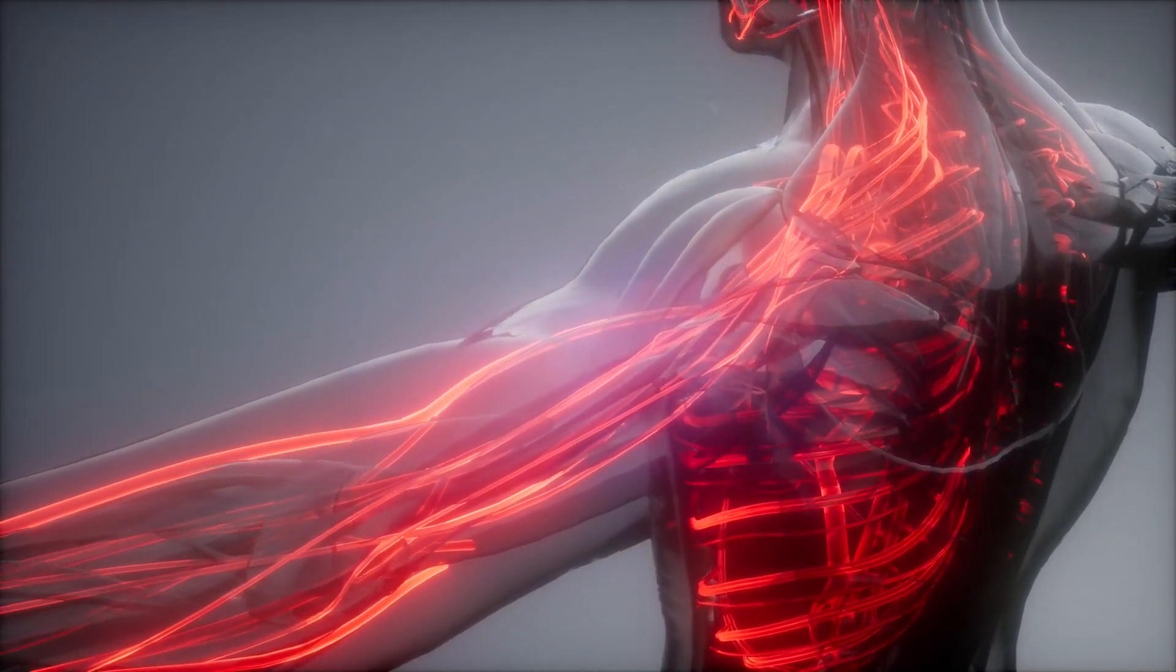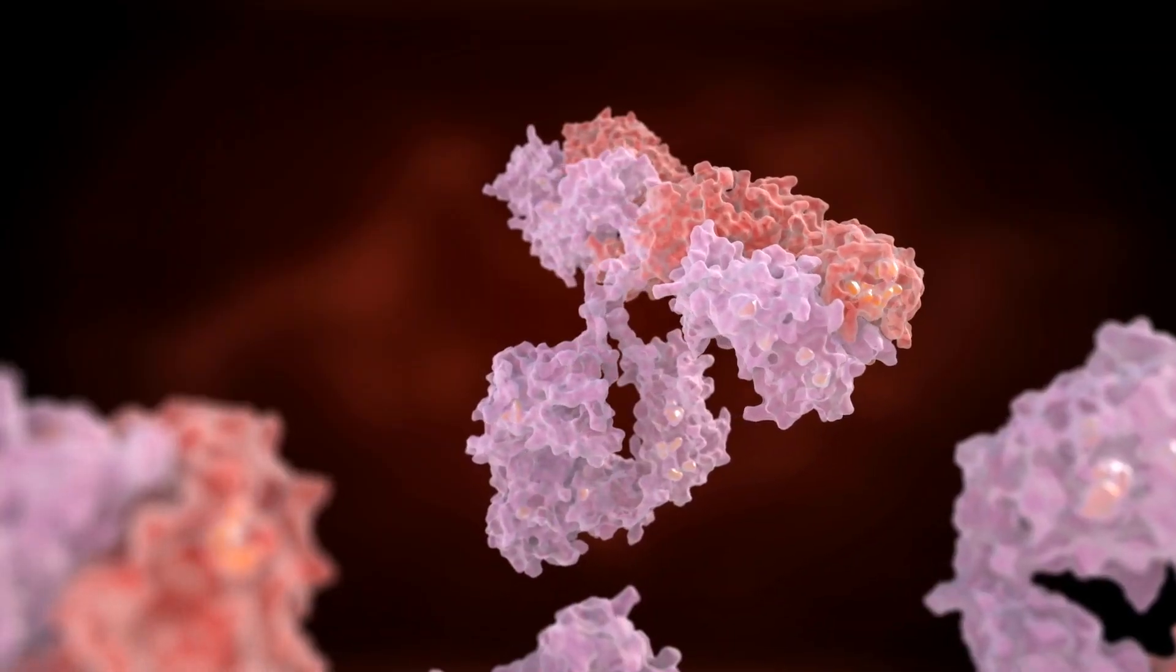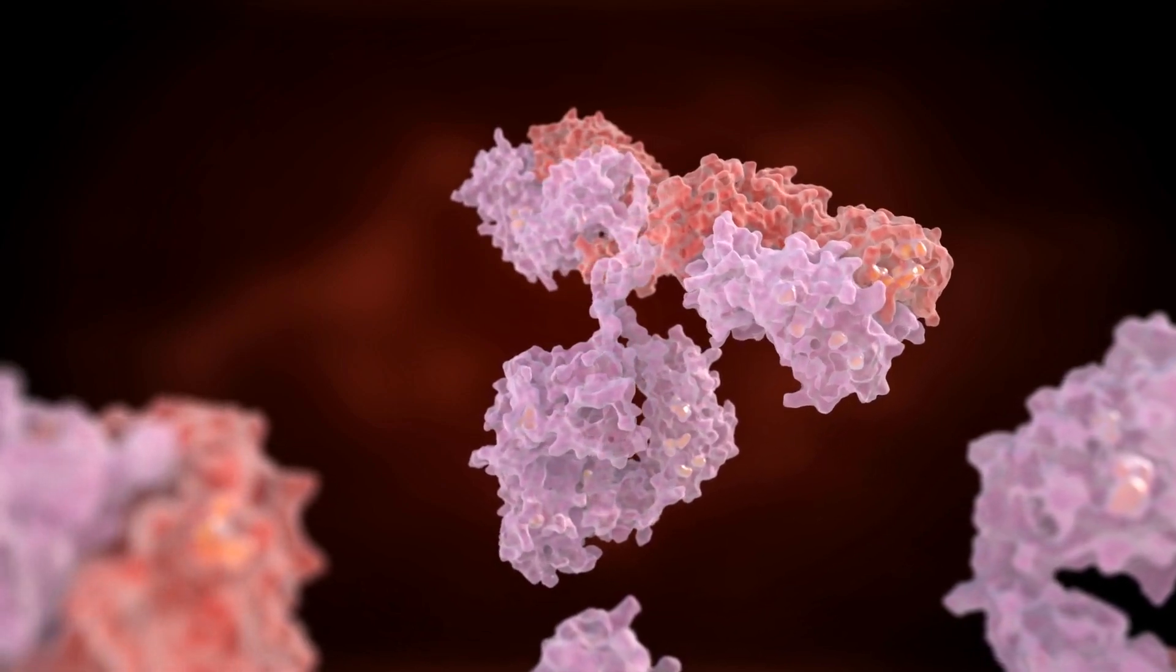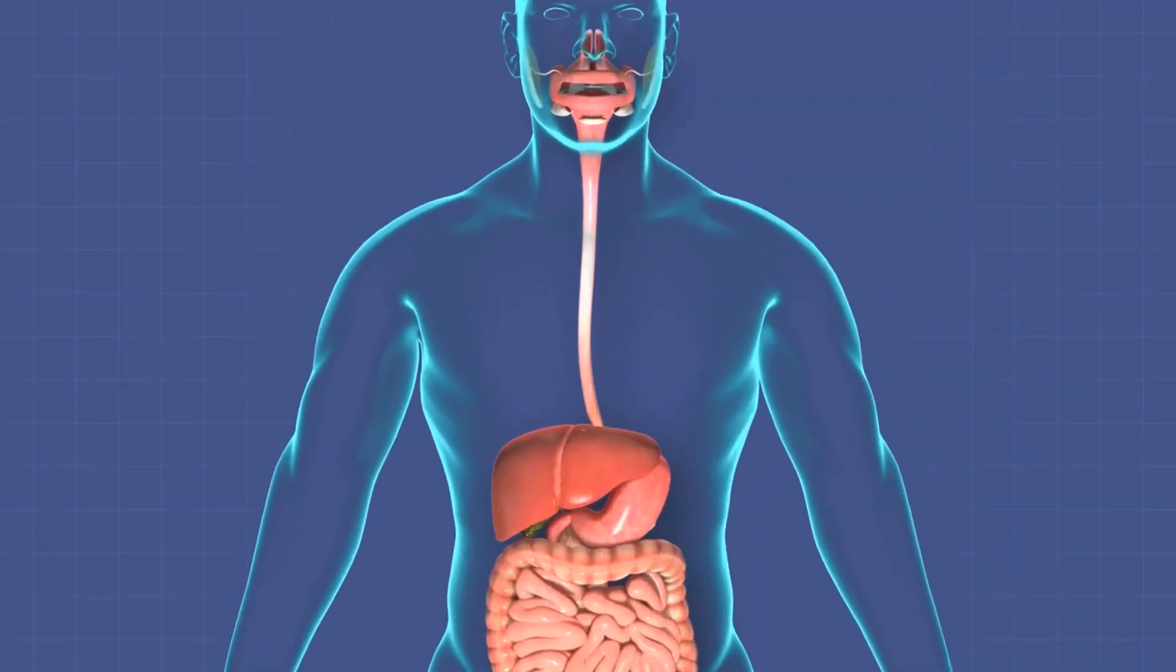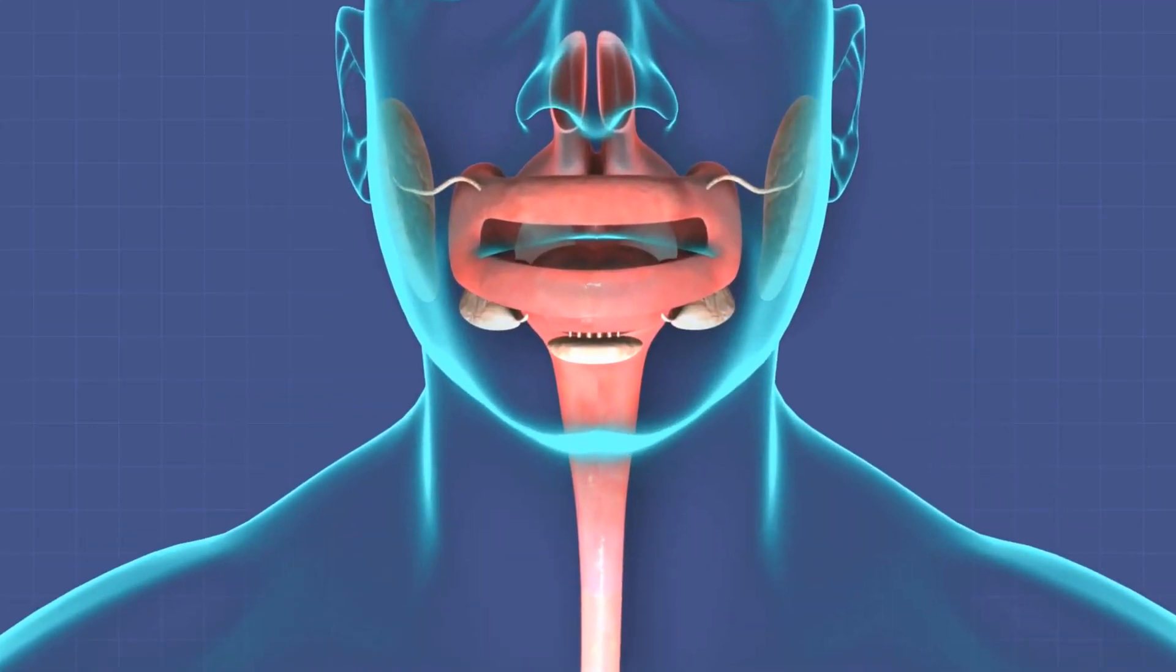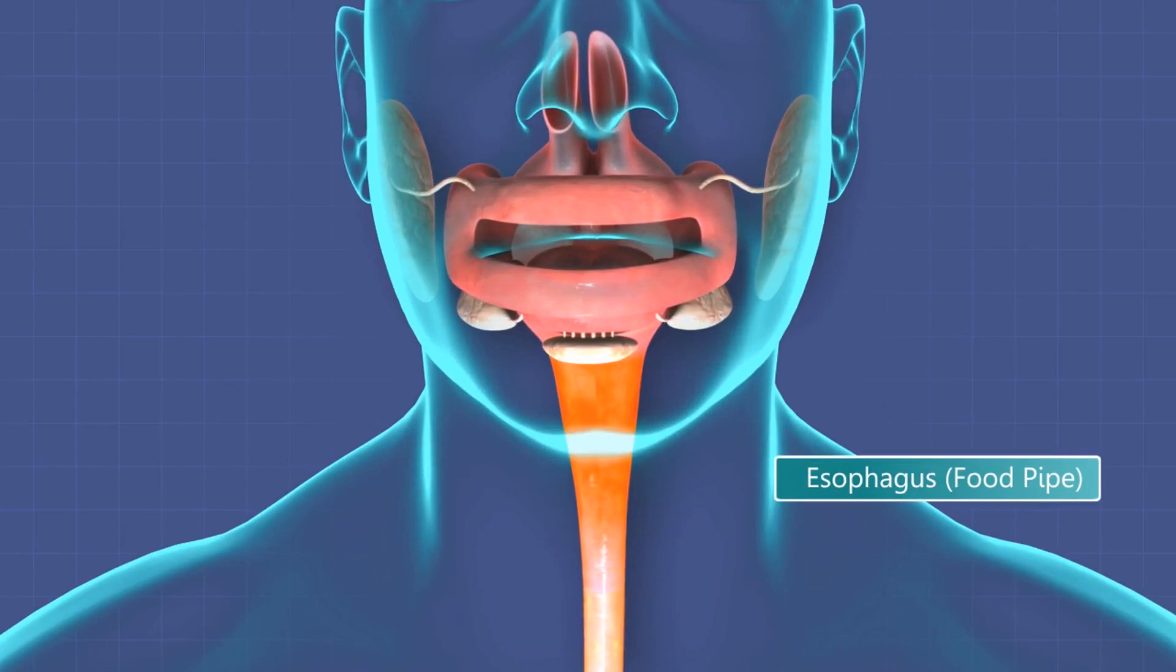Yet another class of antibodies is needed for stopping transmission, the IgA. These are antibodies that patrol the mucosal surfaces of the nose, lungs, and digestive tract.